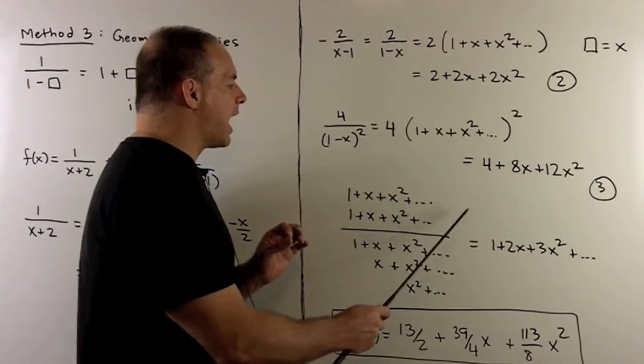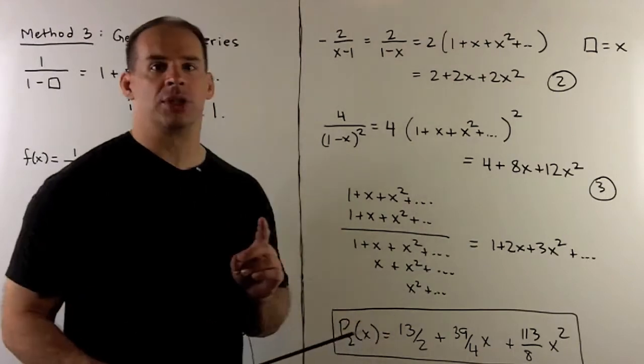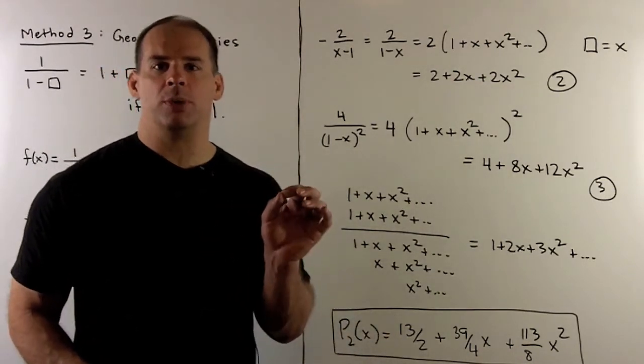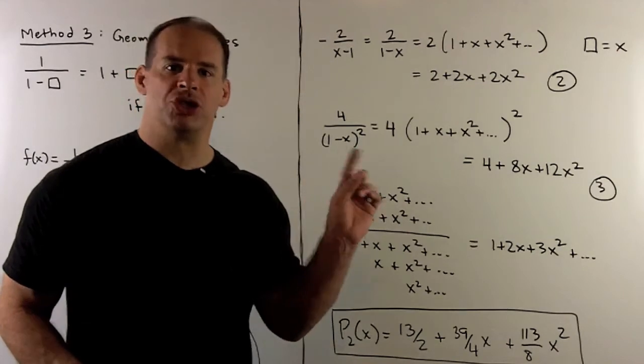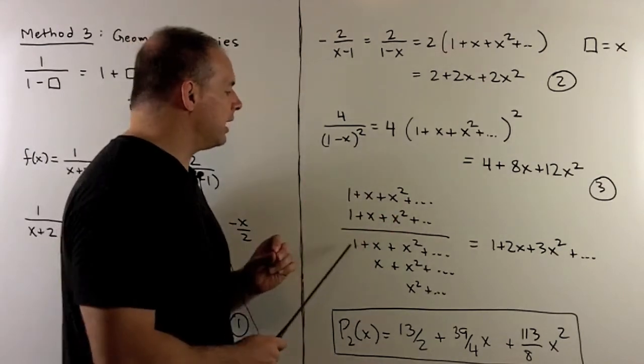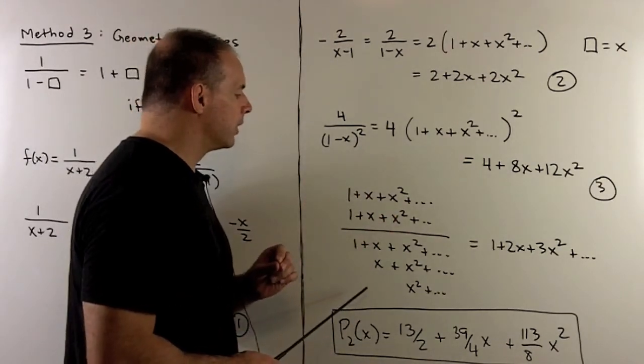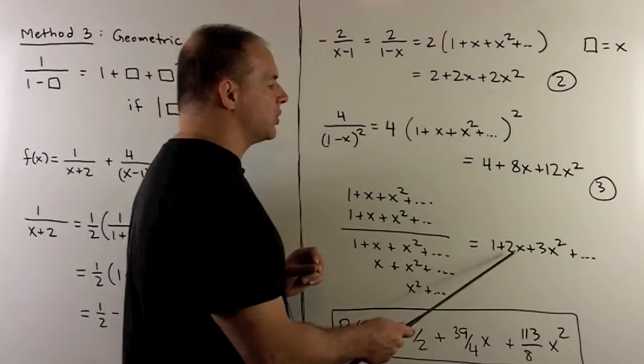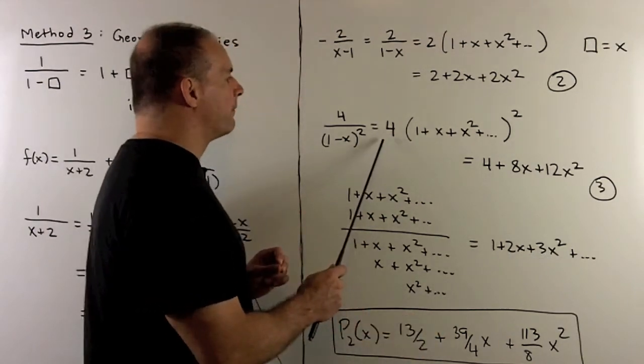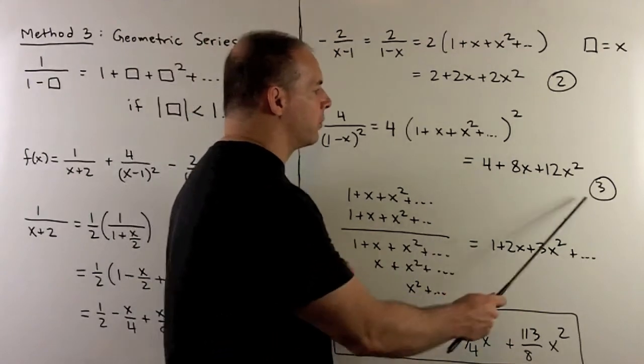Then we note I don't need any of the higher terms because they're going to be x³. So if I multiply anything by an x³, I'm going to get cubed or higher, so we can just drop it. We'll only need these six terms here. We add them up, we get 1 + 2x + 3x². Multiply by 4, and that gives me item 3.